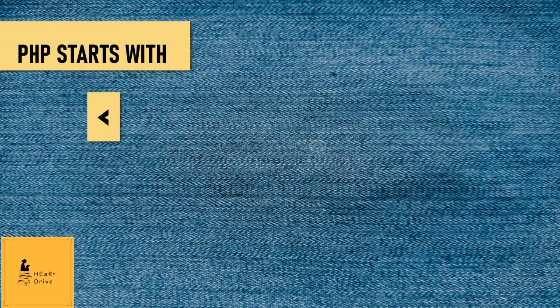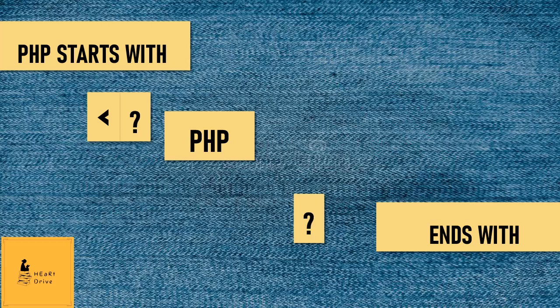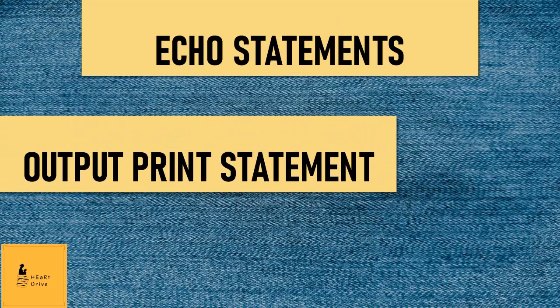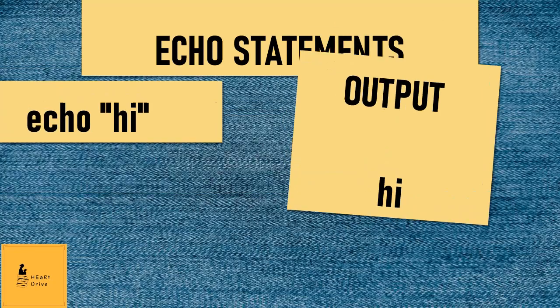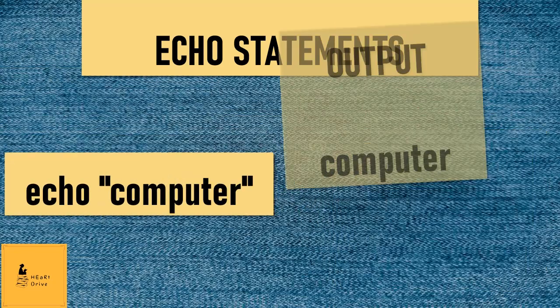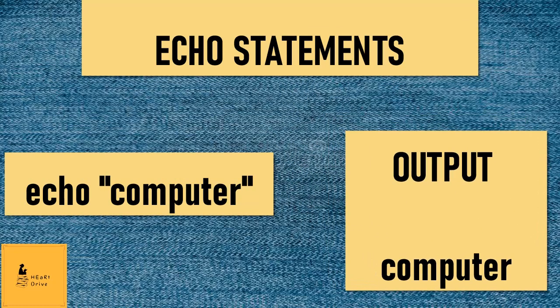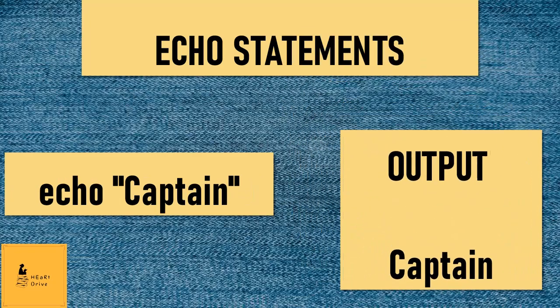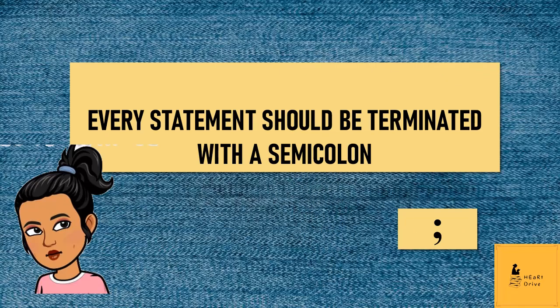A PHP program always starts with ?php and ends with ?angular bracket. Echo statement is just an output print statement. Whatever is given inside the double quotes of an echo statement will be printed in the output area as it is. Every statement in PHP should be terminated with a semicolon.